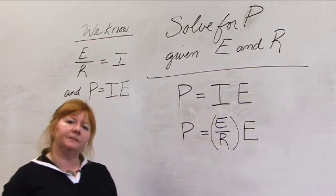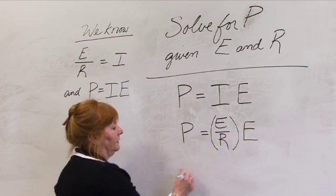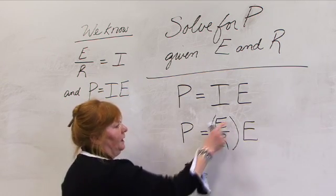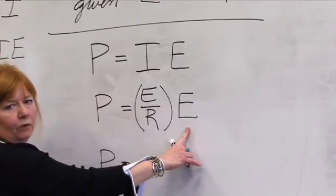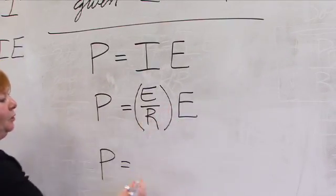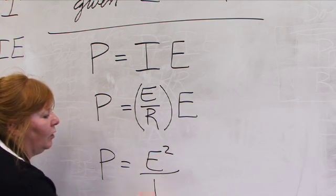And now, let's simplify this. If I multiply E over R times E, remember E is as if it's over 1. It will sit up in the numerator. I will get E squared over R.